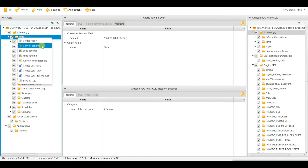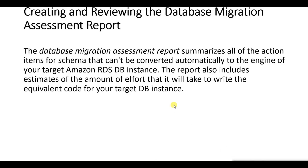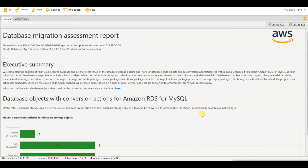For this schema I need to create the DMS Assessment Report. The Database Migration Assessment Report summarizes all action items for schema that cannot be converted automatically to the engine of your target Amazon RDS DB instance. The report also includes estimates of the effort required to write equivalent code for your target DB. In my demo environment, it will pass for all values. For a real project environment, some items might fail and you would need to troubleshoot with your developers.